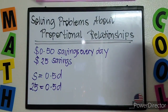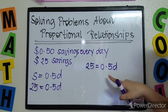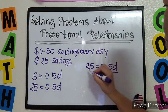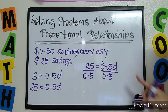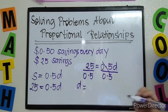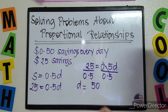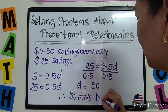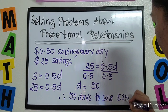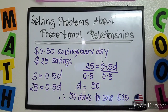To solve for D, we have 25 equals 0.5D. We get rid of 0.5 by dividing both sides of the equation by 0.5. This cancels out, and D is left. Dividing, 25 divided by 0.5 gives us 50. Therefore, it will take 50 days for Yanny to save $25. This time it's the opposite — we are searching for the variable, so we use the inverse operation, which is division.